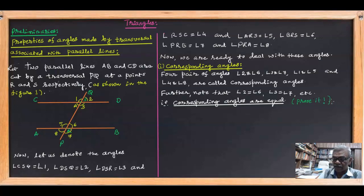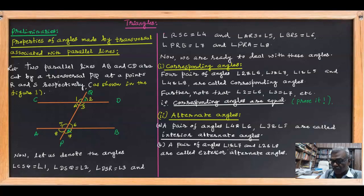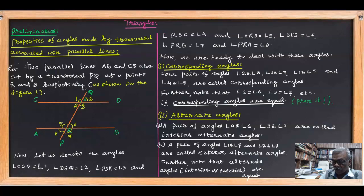Next, alternate angles: the pairs 4 and 6, and 3 and 5 are called interior alternate angles. The pairs 4 and 5, and 3 and 6 are also interior alternate angles. Similarly, the pairs 1 and 7, and 2 and 8 are called exterior alternate angles. Whether interior or exterior, alternate angles are always equal — prove this as an exercise.